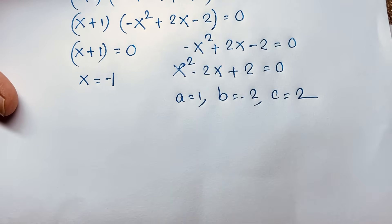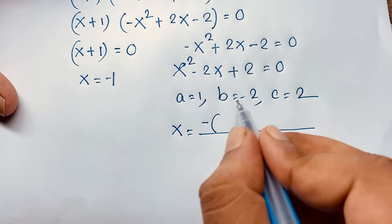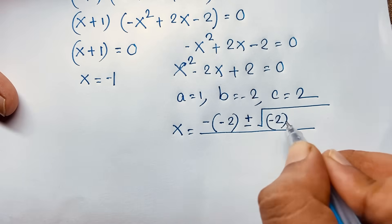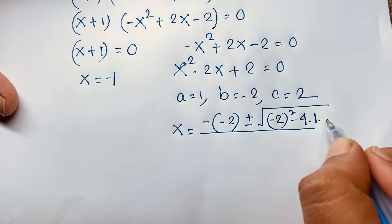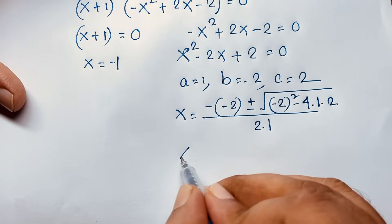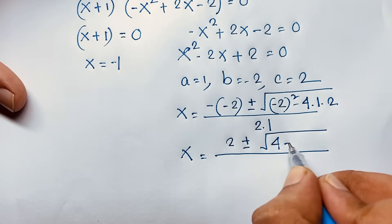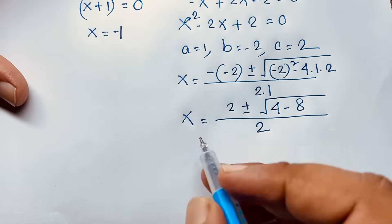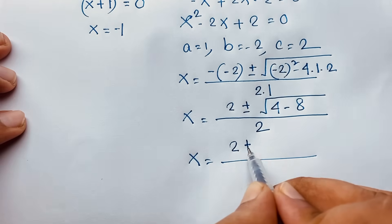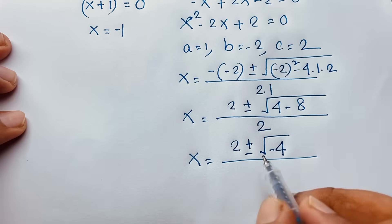Now at this moment, x will be minus b — b is minus 2 — plus or minus root over b squared, meaning minus 2 whole squared, minus 4 times a, which is 1, times c, which is 2, over 2 times a, which is 1. Then here, x will be 2 plus or minus square root of 4 minus 8, over 2. So x equals 2 plus or minus square root of minus 4, over 2.